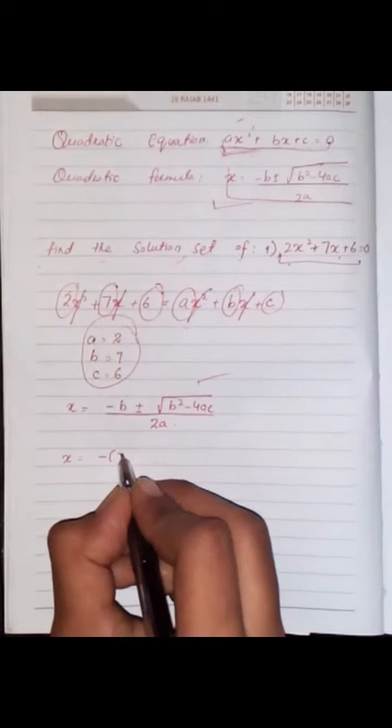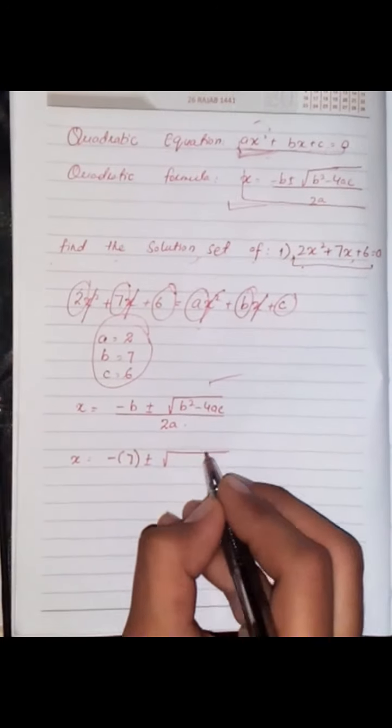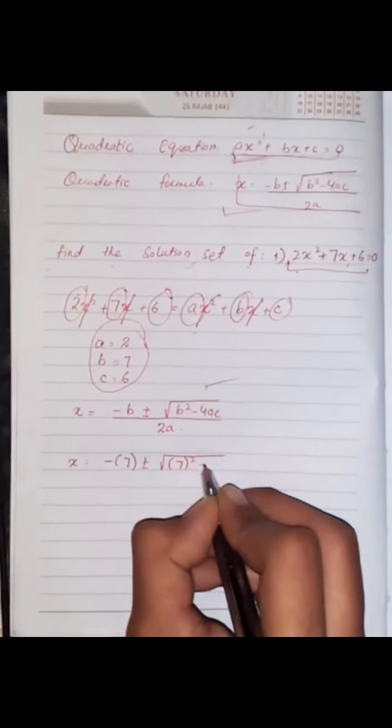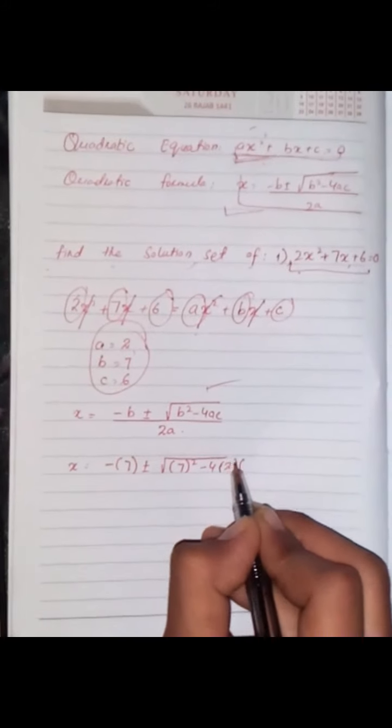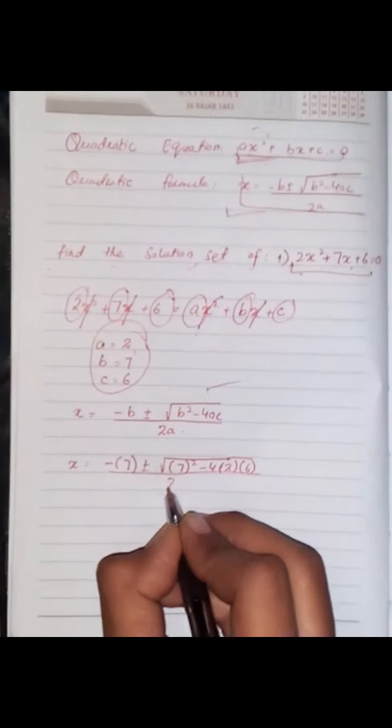x = -b ± √(b² - 4ac) / 2a. So -b equals -(-7), which is -7, plus minus under root, 7 squared minus 4ac, where a equals 2 and c equals 6.